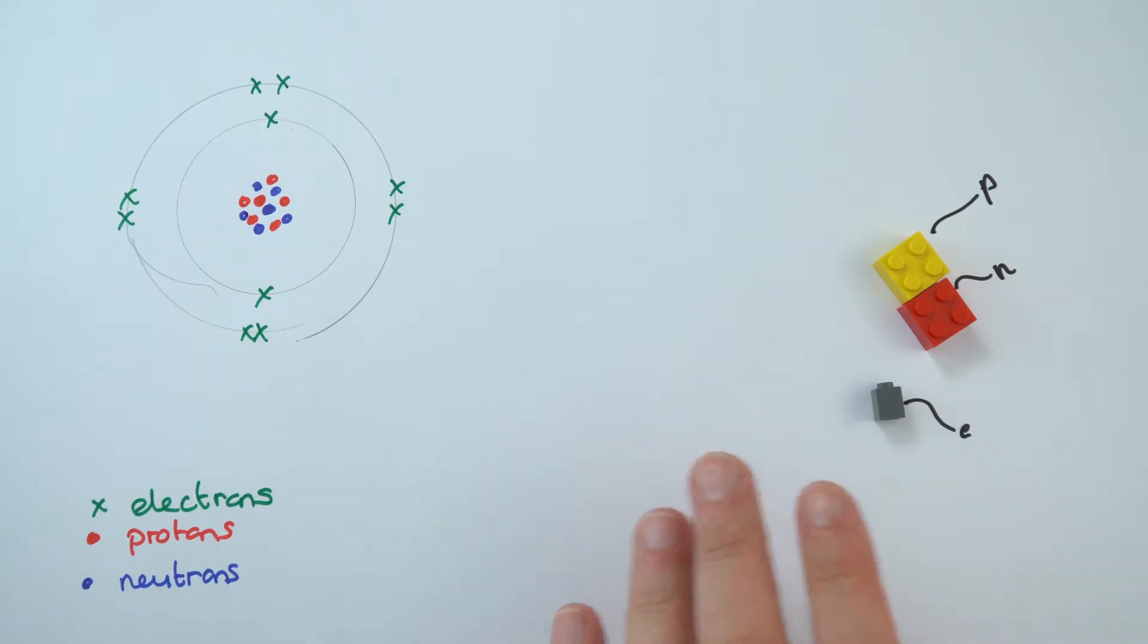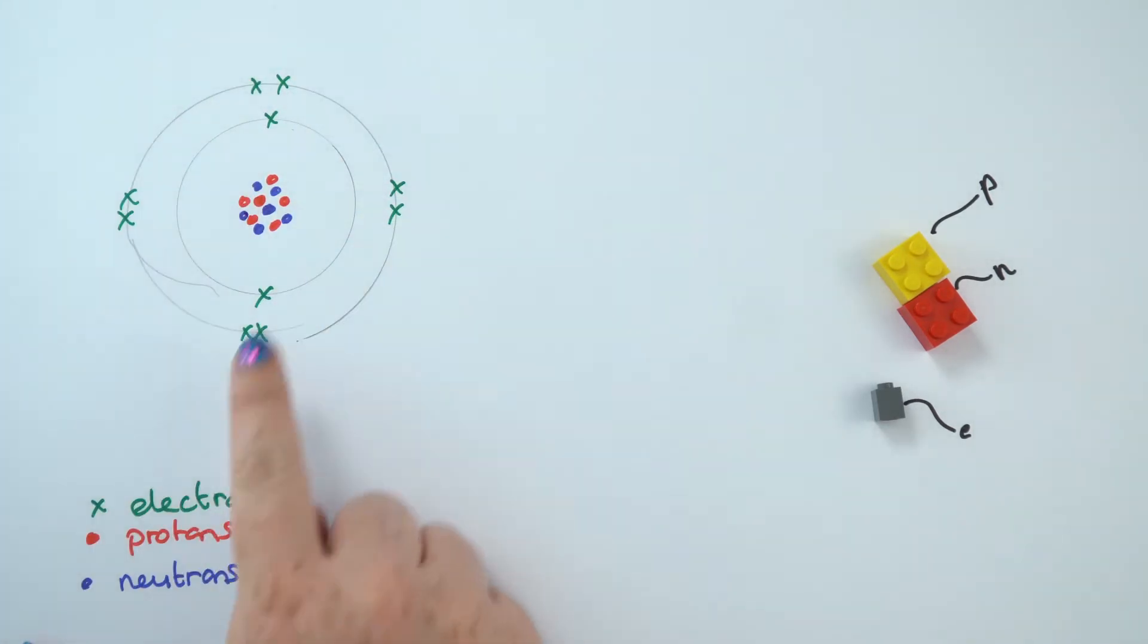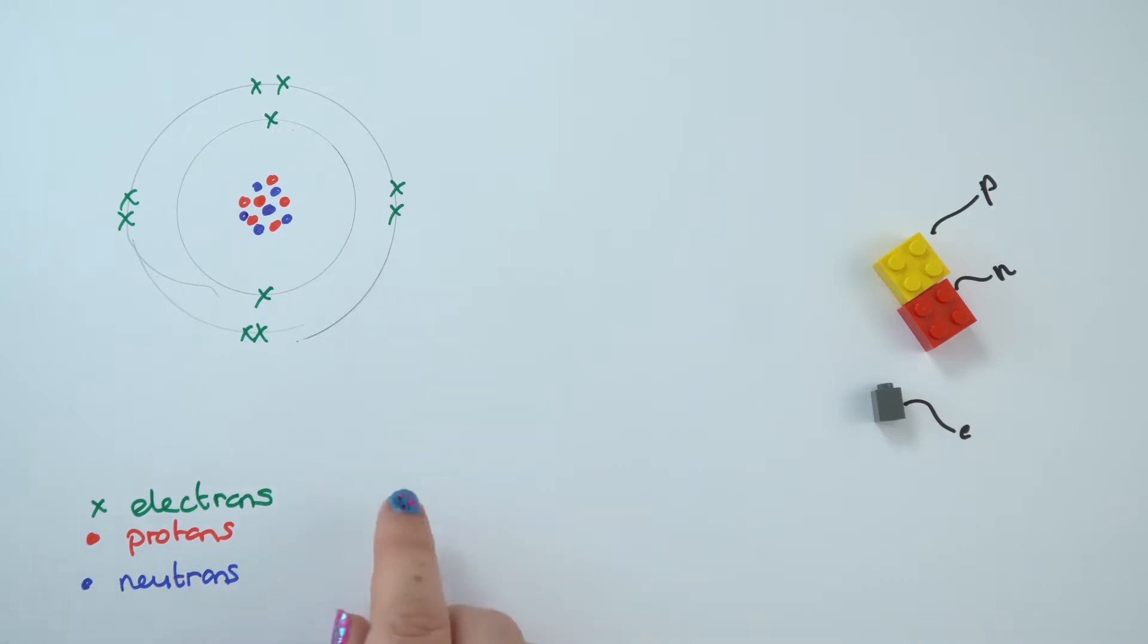So how does that link to chemistry and the work that you're doing with bonding and the behavior of different elements? An element will always want to have a full outer shell. So this element will always want to have eight electrons on the outside. Which means if it's a group seven element and has seven electrons on the outer shell, it will always try and bond with something so that it gains that extra electron.